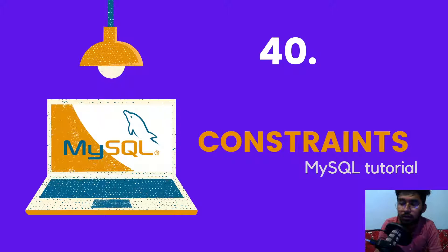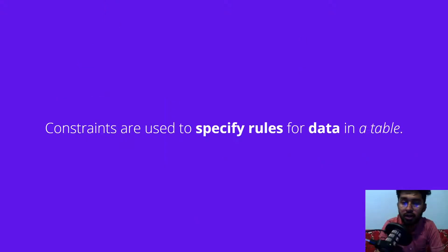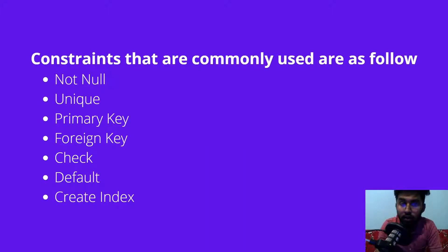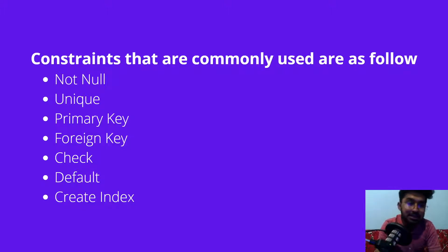First of all, we have to look at the definition of constraints. Constraints in SQL are used to specify the rules for the data in a table. We have a bunch of different constraints such as NOT NULL, UNIQUE, PRIMARY KEY, FOREIGN KEY,